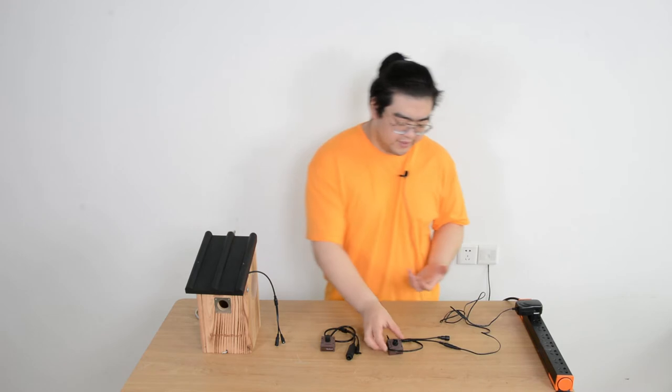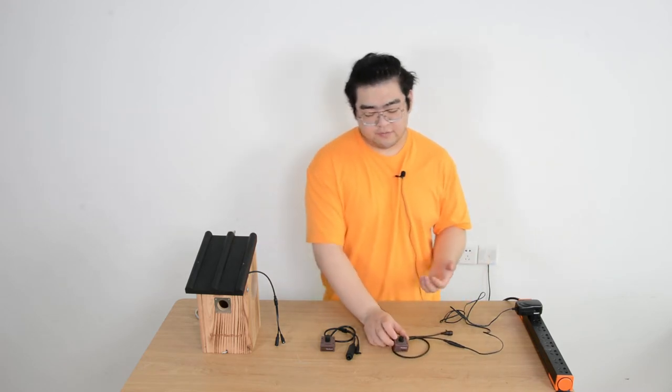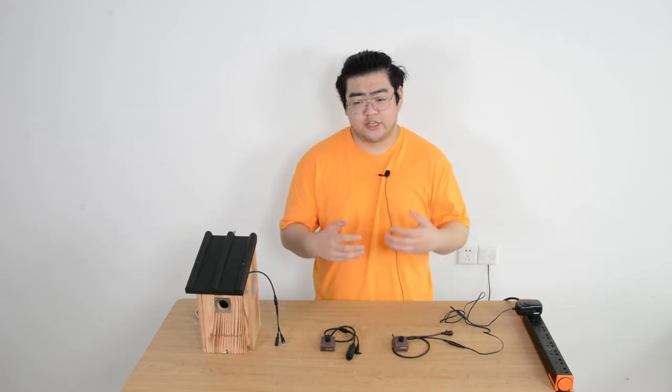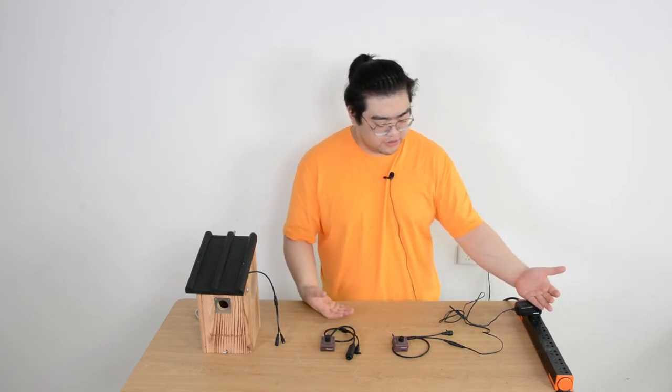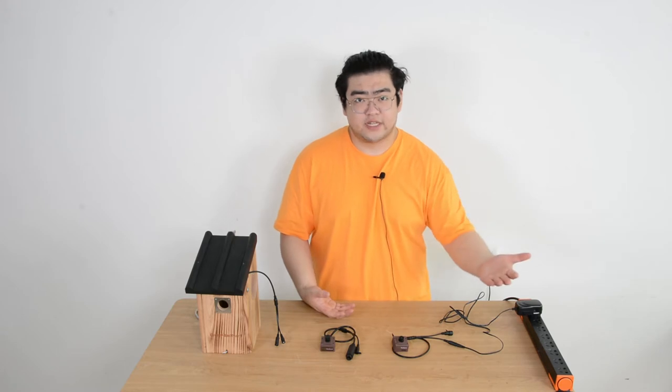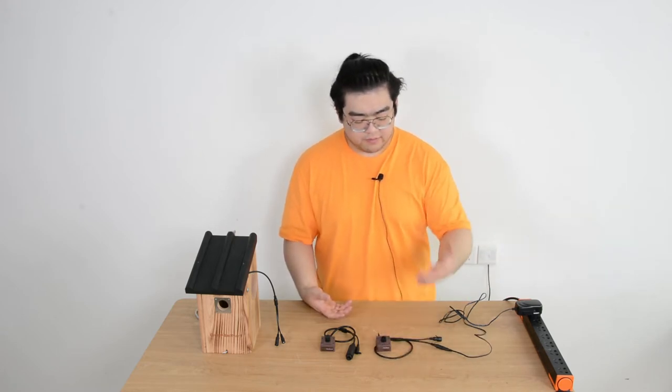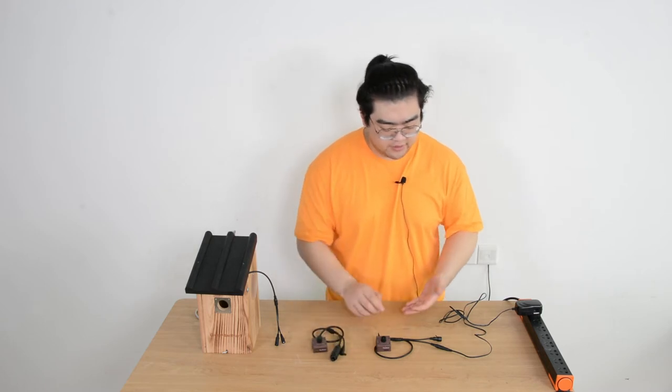So the most trickier one is the Wi-Fi bird box camera. Because when you get a new camera, there are usually more configurations needed. First of all, we connect it to the power. So once you connect it to the power, maybe a few seconds, you'll hear a little click. The click means the camera is turned on now.